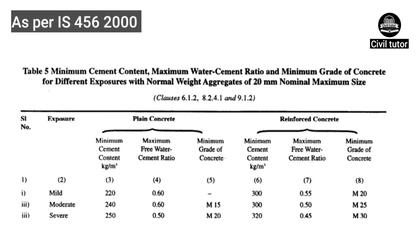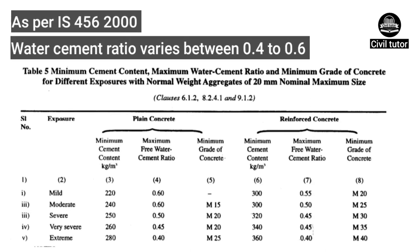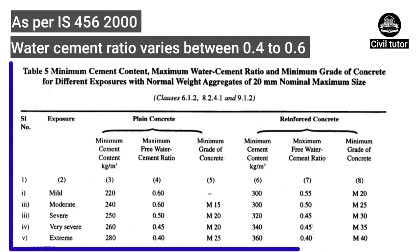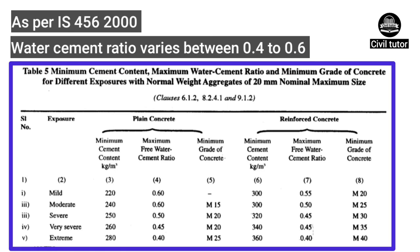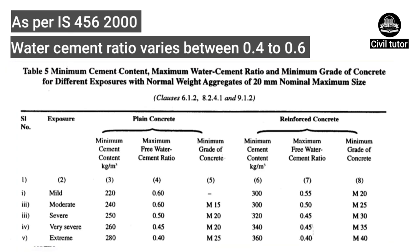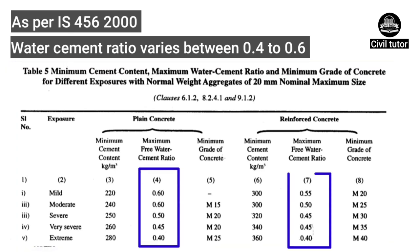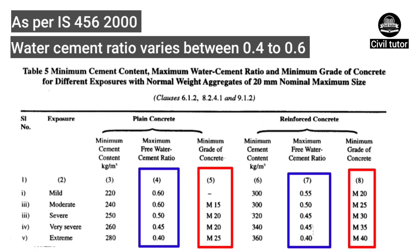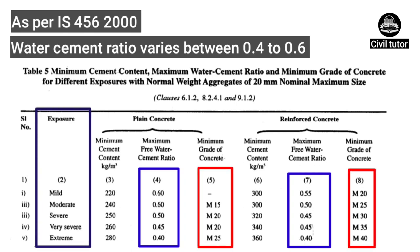As per IS 456-2000, the water cement ratio varies between 0.4 to 0.6 depending upon exposure conditions and the type of concrete mix. I have extracted this table from IS 456-2000 to give you a clear explanation about various water cement ratios for different concrete mixtures under different exposures.